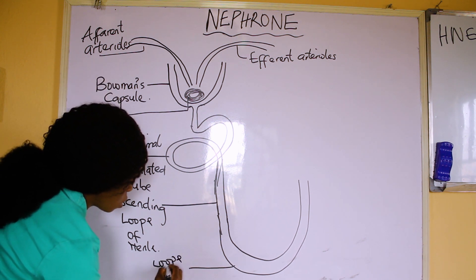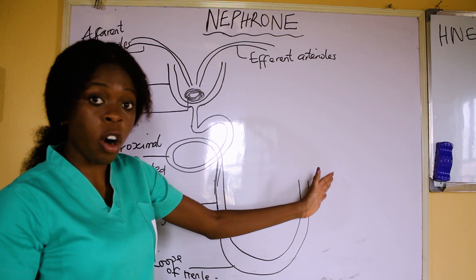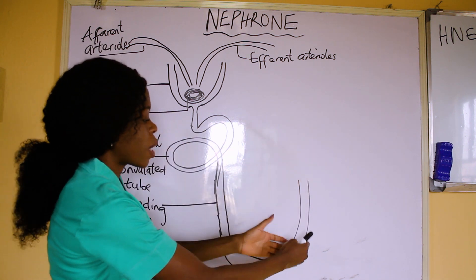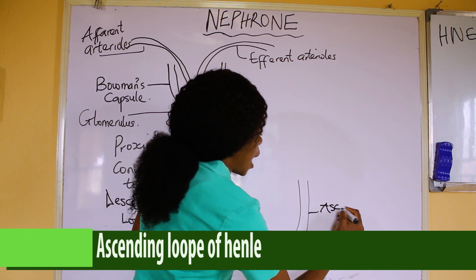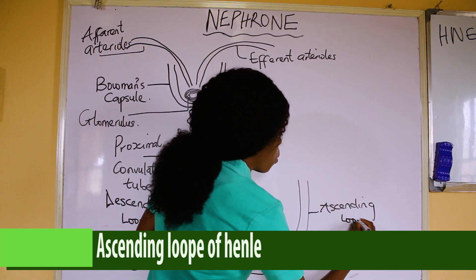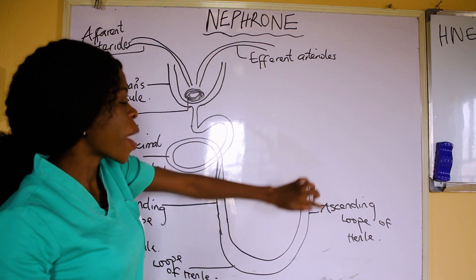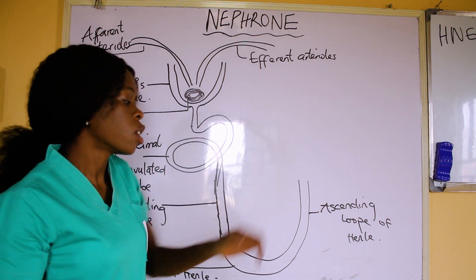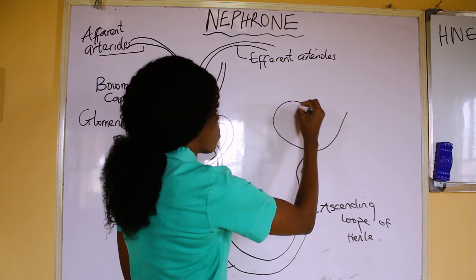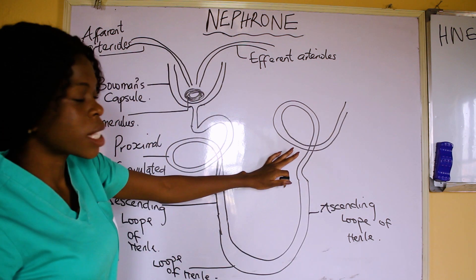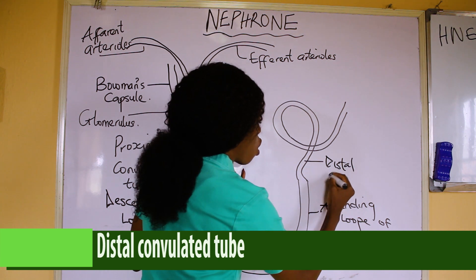We write loop of Henle for the bend. After this curve, you can see this one is going up, so this is the ascending loop of Henle. After the ascending loop of Henle, we have another convoluted tube — twisted — so we draw the convoluted tube again. This twisted tube is called the Distal Convoluted Tube, and we label it as the Distal Convoluted Tube.